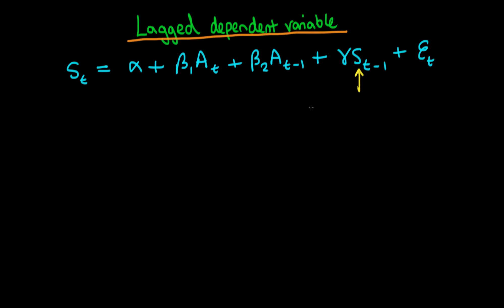What might be your motivation for including this lag dependent variable? There are two types of reason. One is fairly econometric or theoretical: let's say we thought there are other factors which also determine sales but we don't have measurements of them. By including a lag dependent variable, because the dependent variable itself implicitly contains these omitted factors, we're in a sense controlling for them. It's not a completely perfect process but it might be better than nothing.